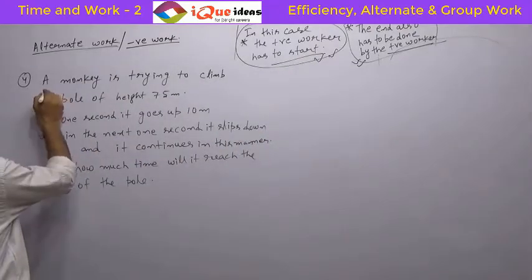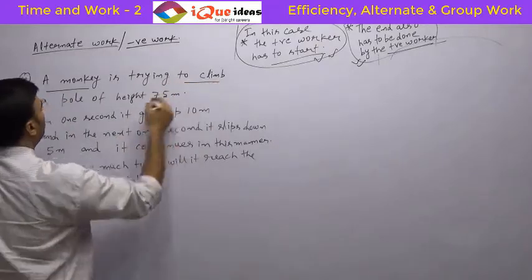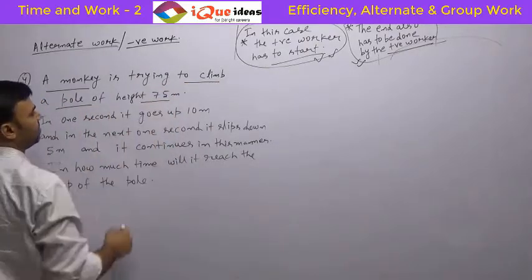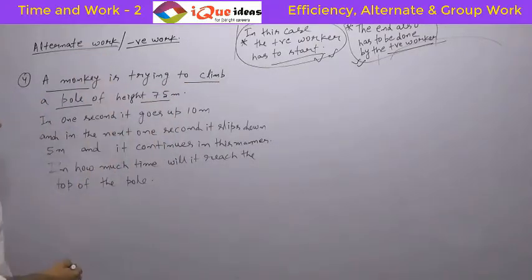Now let's take up this question. It says a monkey is trying to climb a pole of height 75 meters. So the total work to be done is 75 meters.